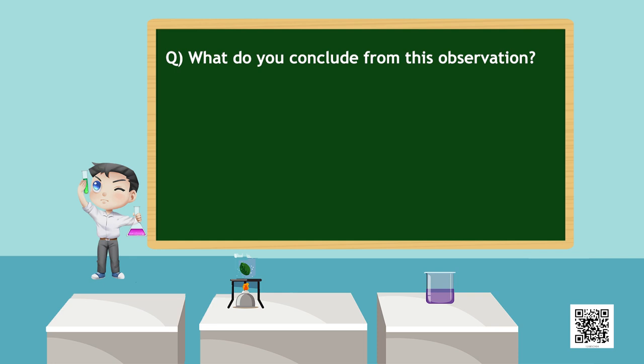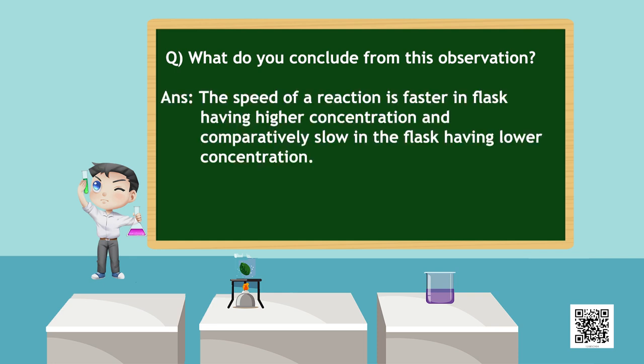The speed of reaction is faster in the flask having higher concentration and comparatively slow in the flask having lower concentration. Thus, we can say that the rate of a reaction decreases with the passage of time as the concentration of reactants decreases. Conversely, rates generally increase when reactant concentration is increased. So, rate of a reaction depends upon the concentration of reactants.